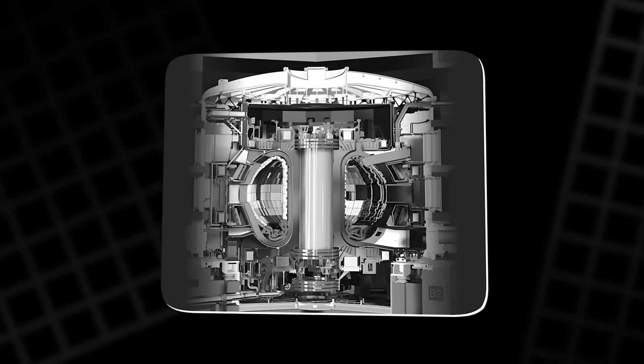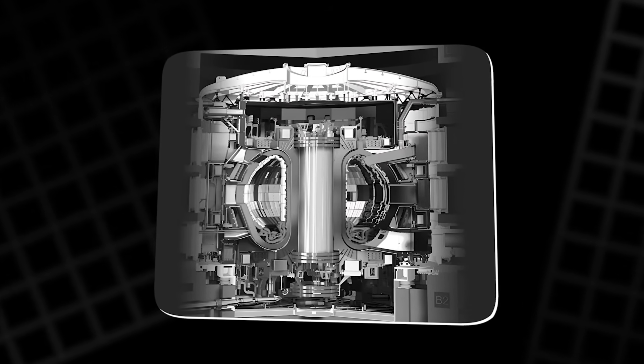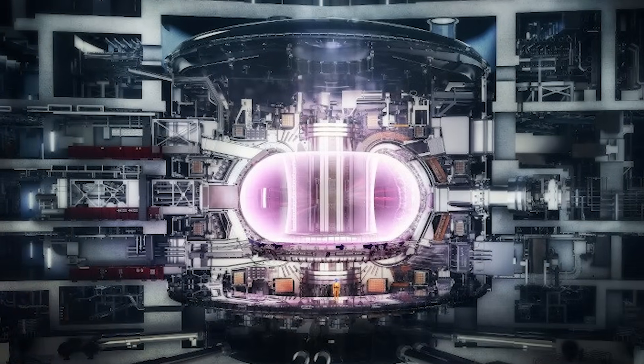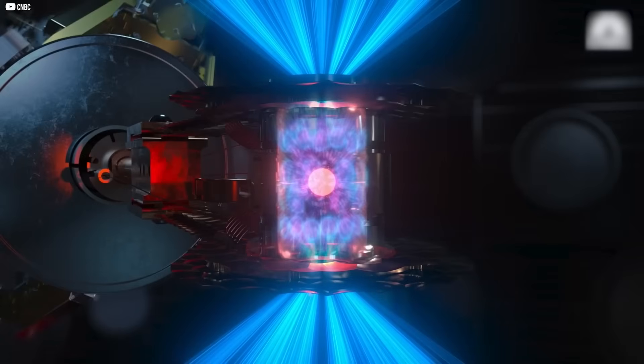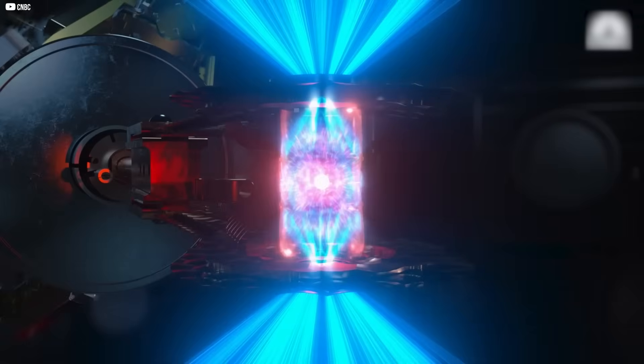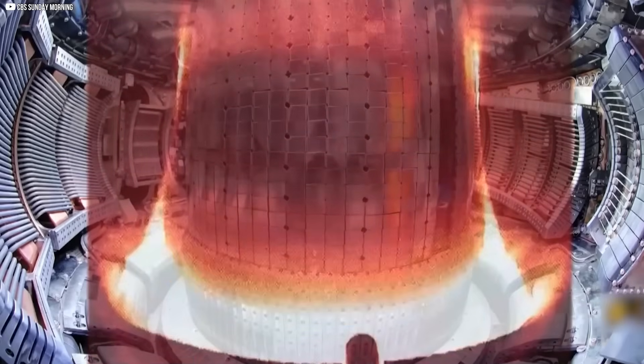Especially when it comes to how dense that fuel can get before the whole thing unravels. To measure how close we are to usable fusion, scientists use a number called the triple product. It's the product of three things: temperature, ion density, and energy confinement time.